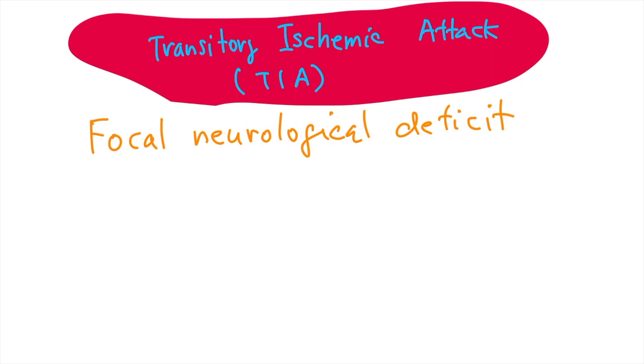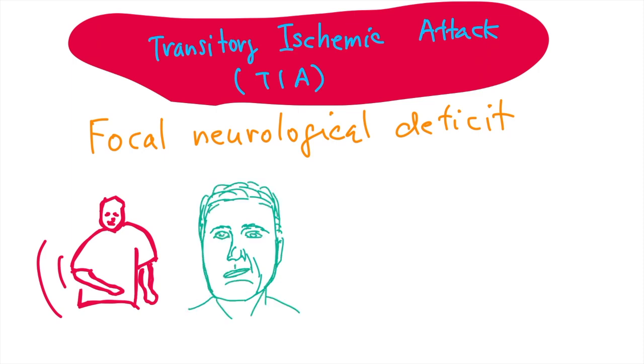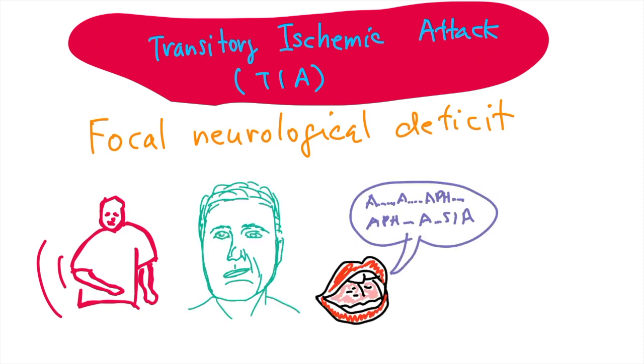For example, one-sided hand paresis or one-sided face paresis or speech deficit that we call aphasia or temporary one-sided blindness.